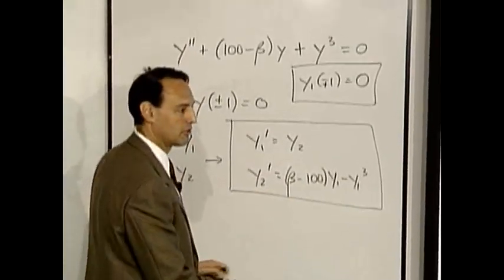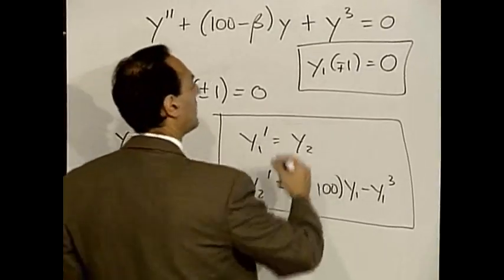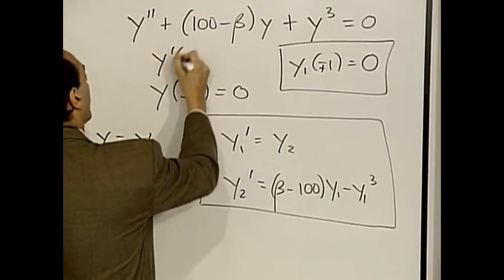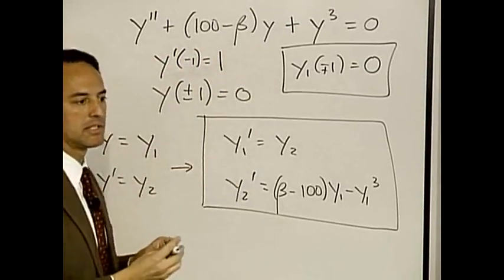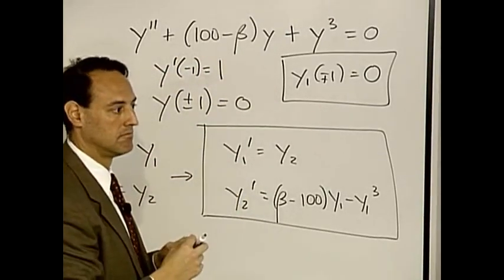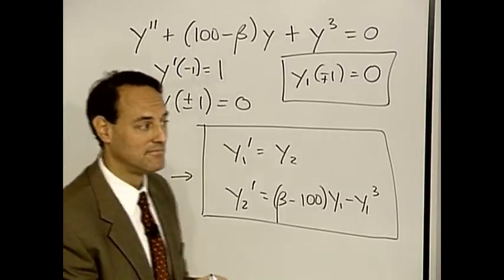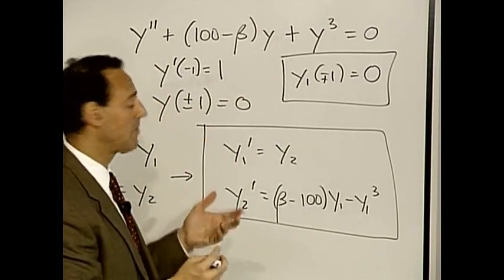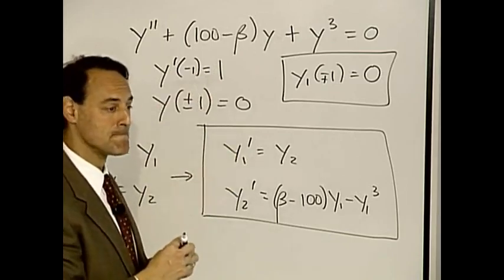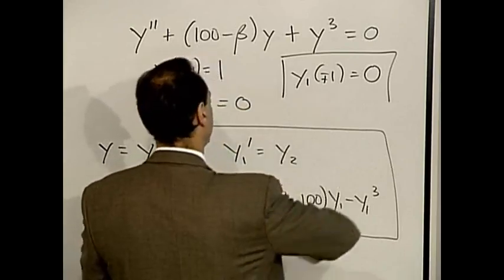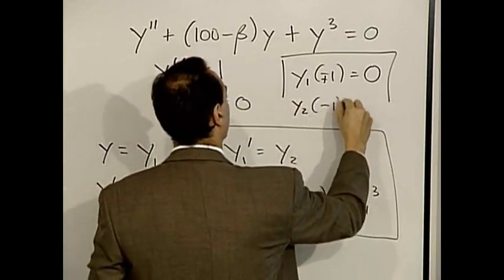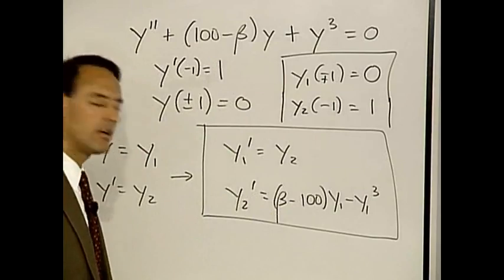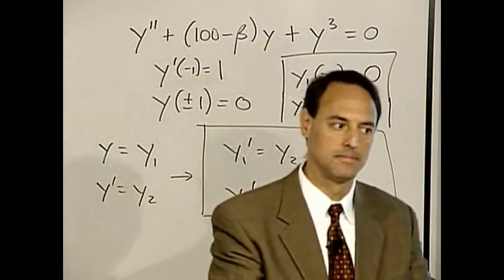I'm going to make up the following third constraint. Remember how we played around with launch angle on the left? Let's do the following: y prime at negative one equals one — I'm making this up. You need another constraint; if I pick this differently, it'll change beta. So the third constraint is y2 at negative one equals one. This is just counting: however many things you need to pin down is how many constraints you have to give.